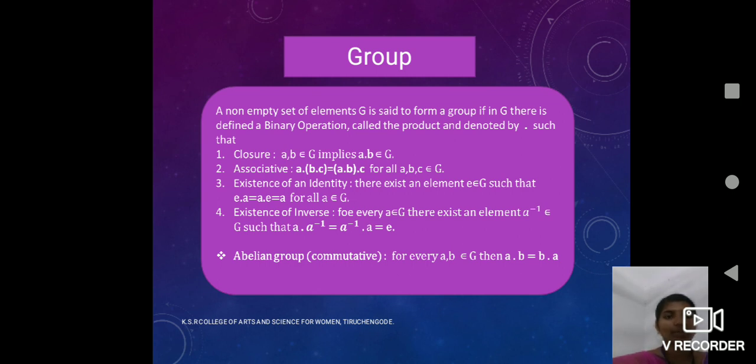Definition of Abelian group. The Abelian group is also called a commutative group. Take any two non-zero elements, namely A and B in a group G, then A dot B is equal to B dot A is called Abelian.